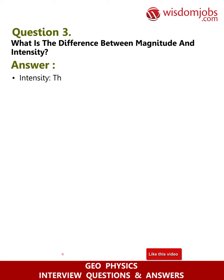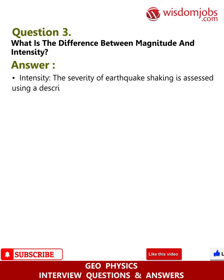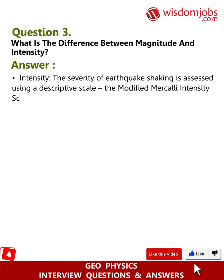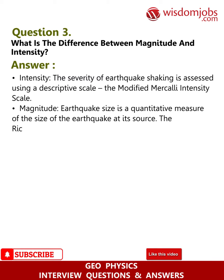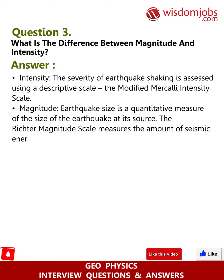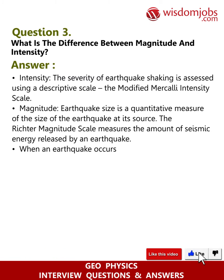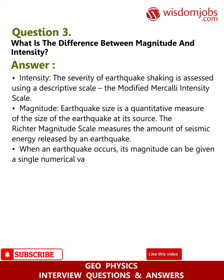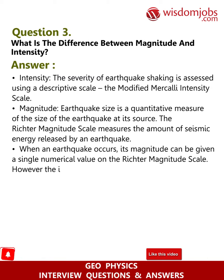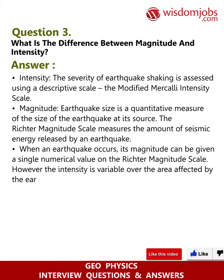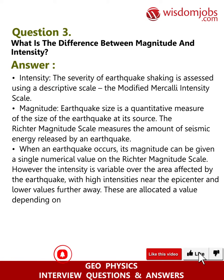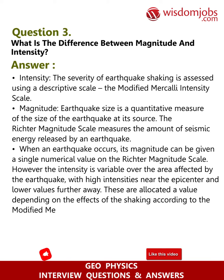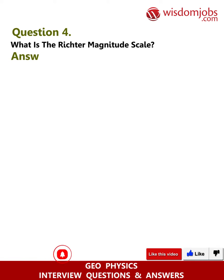Question 3: What is the difference between magnitude and intensity? Answer: Intensity — the severity of earthquake shaking — is assessed using a descriptive scale, the Modified Mercalli Intensity Scale. Magnitude is a quantitative measure of the size of the earthquake at its source. The Richter magnitude scale measures seismic energy released. An earthquake has a single magnitude value, but intensity varies over the affected area, with high intensities near the epicenter and lower values further away, allocated according to the Modified Mercalli Intensity Scale.